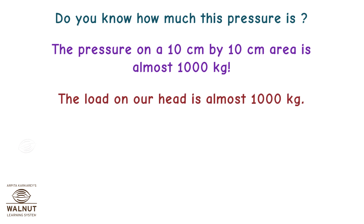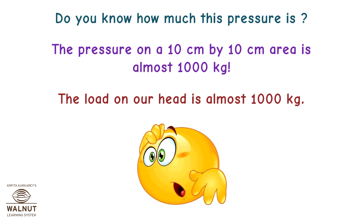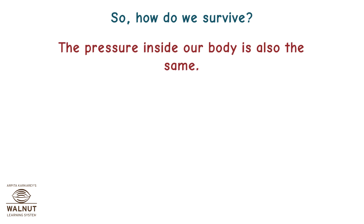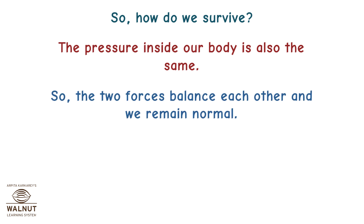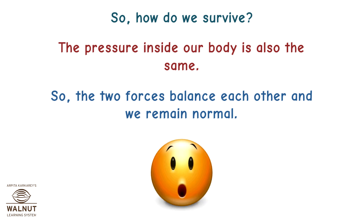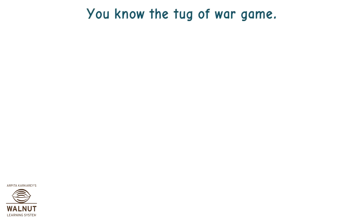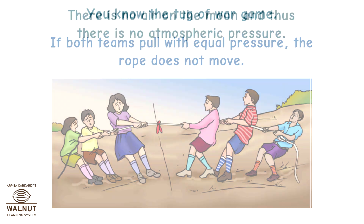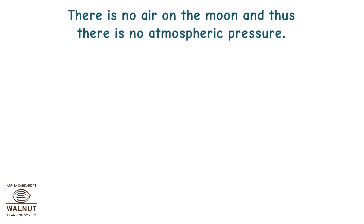The load on our head is almost 1000 kg. So how do we survive? The pressure inside our body is also the same, so the two forces balance each other and we remain normal. You know the tug of war game — if both teams pull with equal pressure, the rope does not move. There is no air on the moon and thus there is no atmospheric pressure.